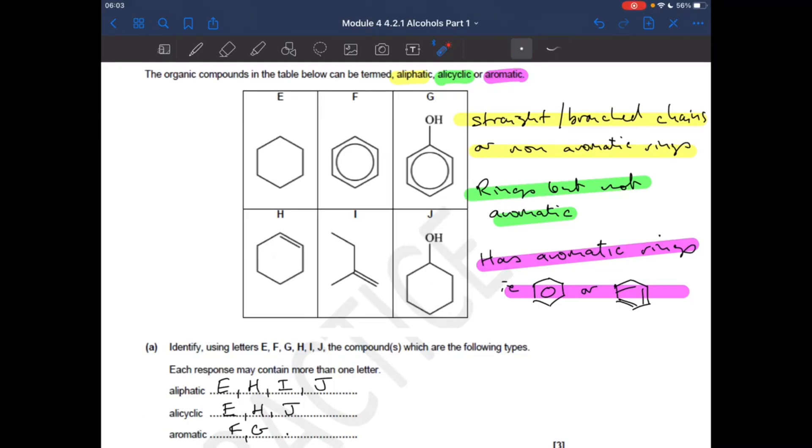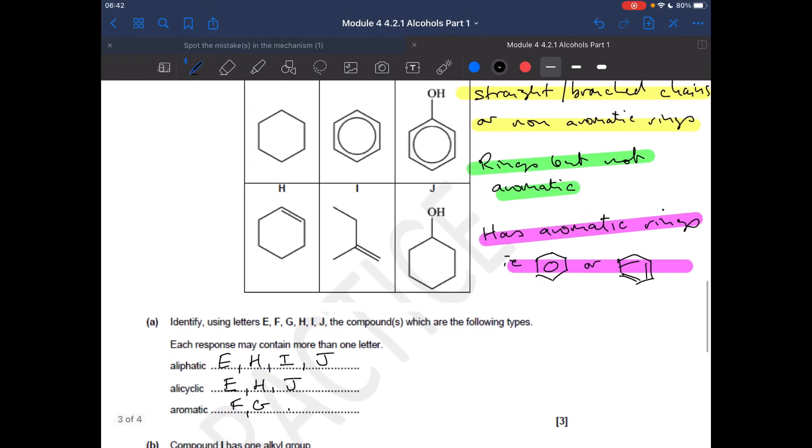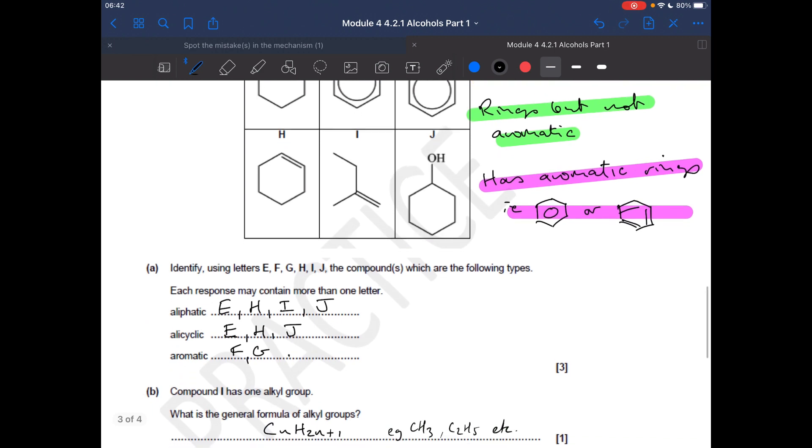And aromatic has got to have a benzene ring in it. So that or that, well, it's those two there. And the next part, compound I has one alkyl group. What's the general formula of alkyl groups? So that's CnH2n+1.